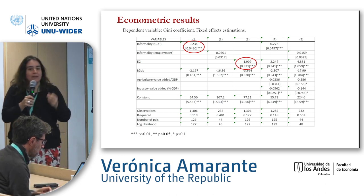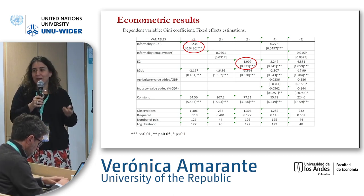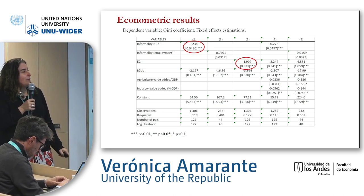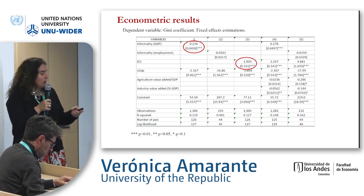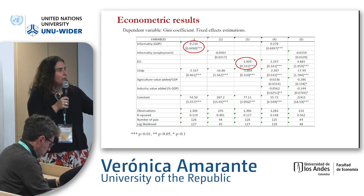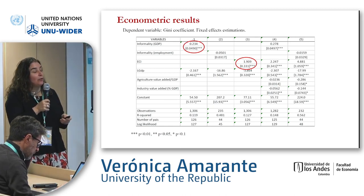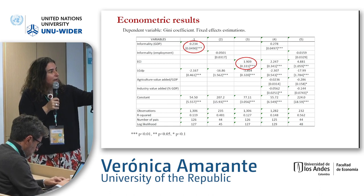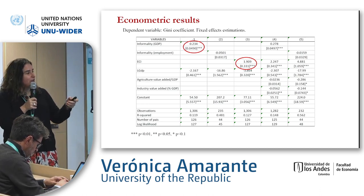Presenting basic regression results without the full set of controls — since when controls are added the main results remain — in the first column we get a positive association between informality measured by the GDP measure and inequality, controlling for GDP. In the second case, with the ILO employment measure, we do not get any results. With economic complexity, the third column shows a positive result, which differs from previous results in the literature and is what we are now trying to understand. In the other two columns, using both measures together, the results are maintained.